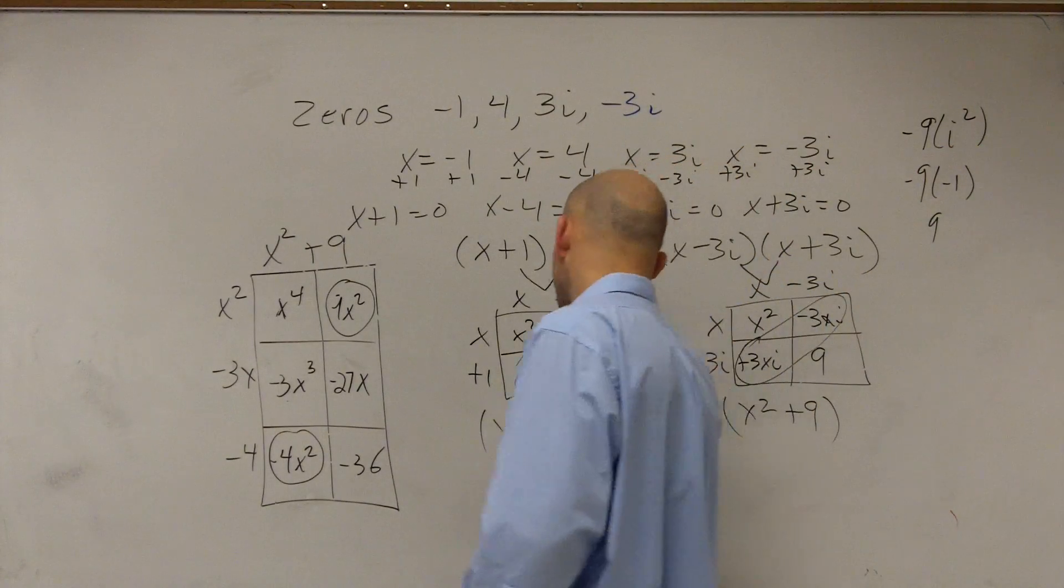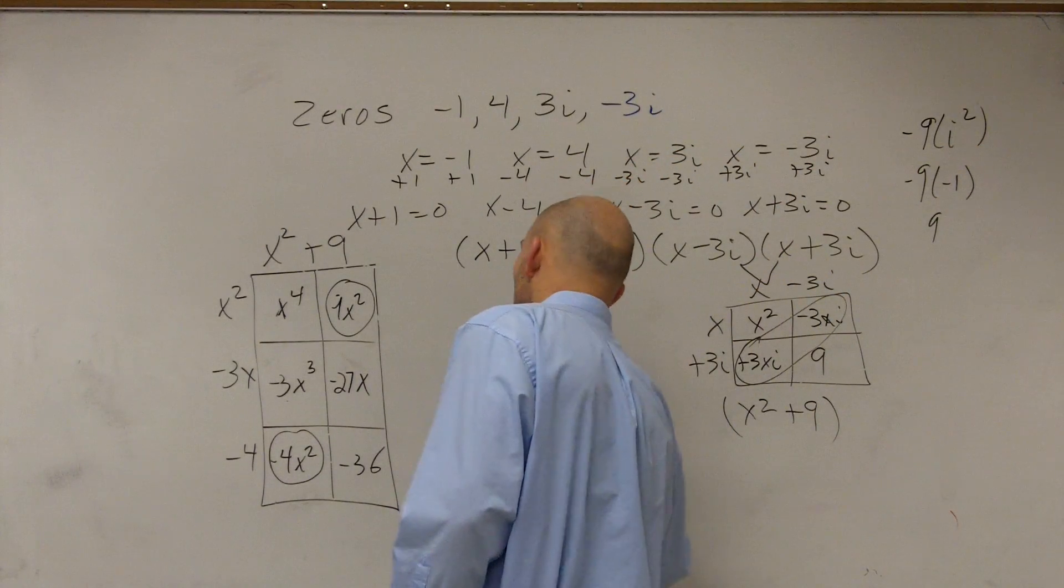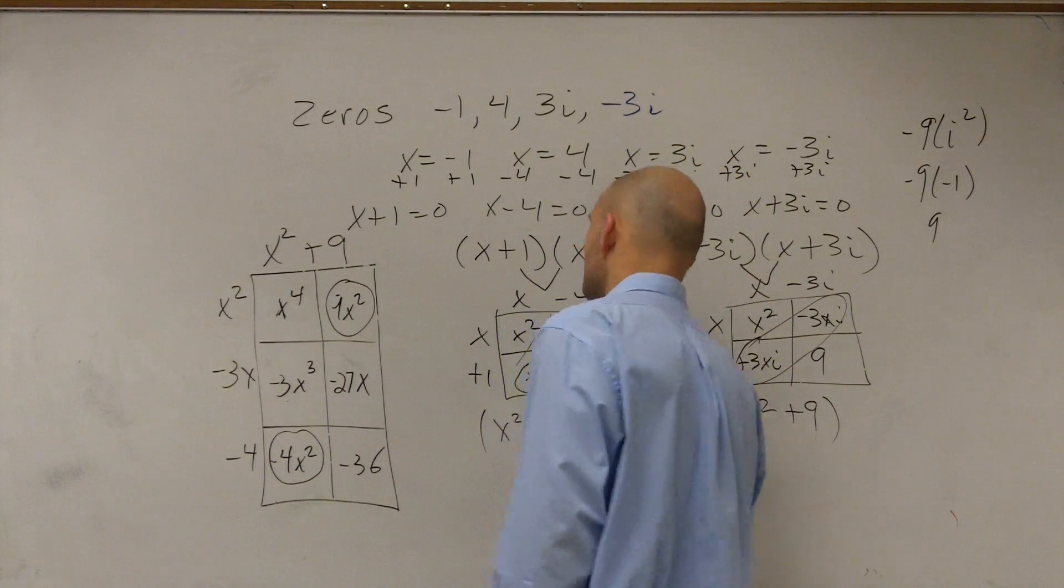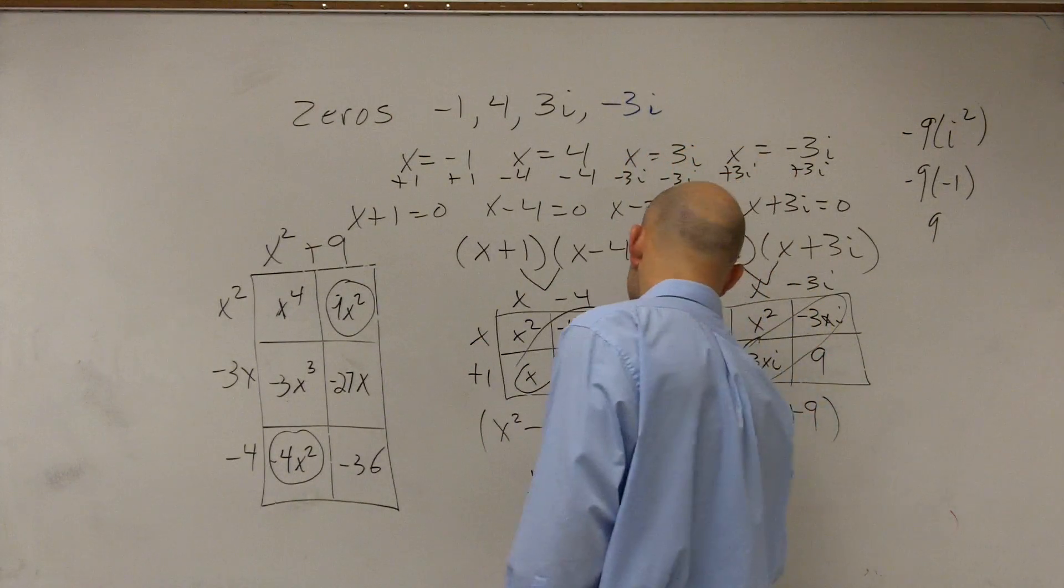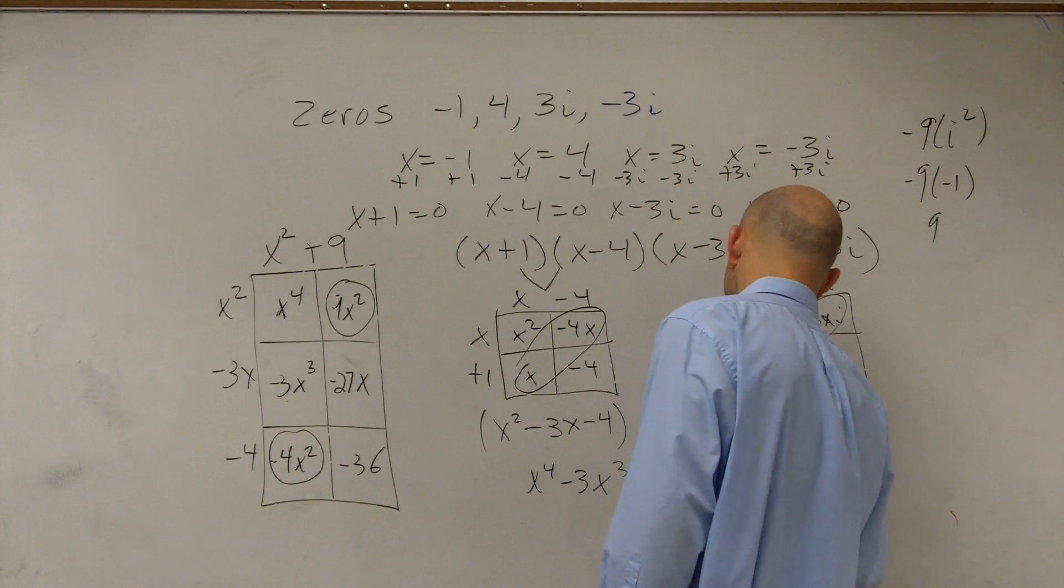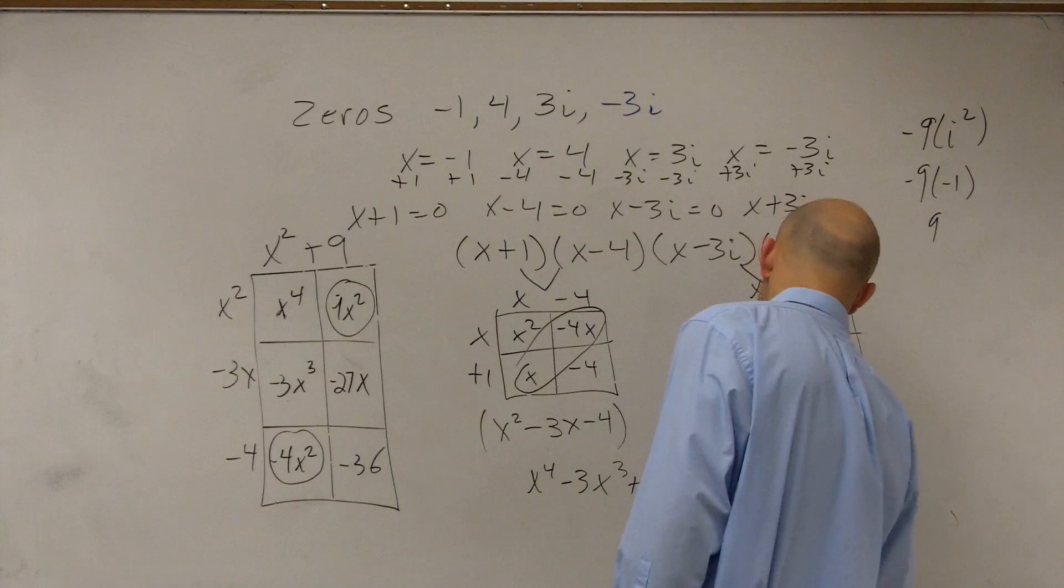So now we just write our final answer, which is x to the 4th, then minus 3x cubed. This becomes positive 5x squared minus 27x minus 36.